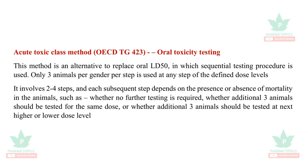The acute toxic class method, guideline 423, is an alternative to replace the oral LD50. Only three animals per gender per step are used at any step of the defined dose levels. It involves two to four steps. Whether additional three animals should be tested depends upon the higher or lower dose level and morbidity or mortality data.